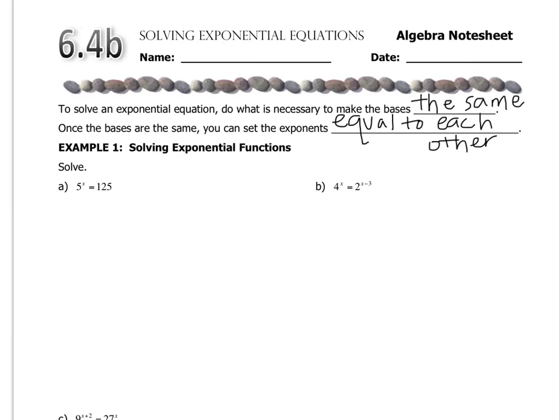If you make them both have the same base, then you can set the exponents equal to each other. So for example, this has a base of 5, and this is 125 to the first power. If there is no exponent, it's a 1. So the base here is 5, and the base here is 125.